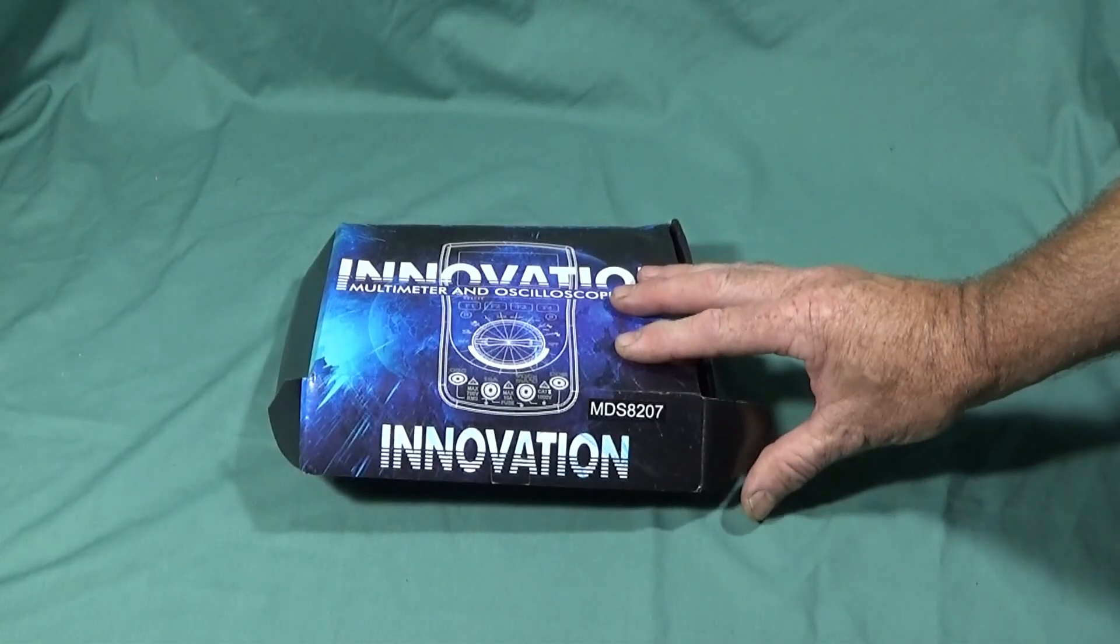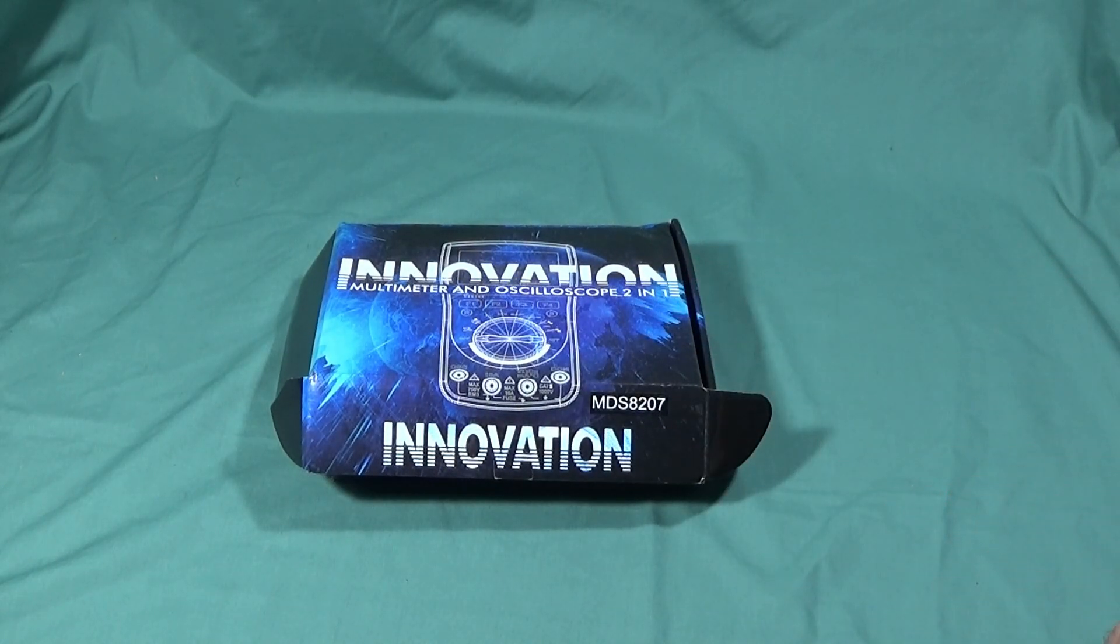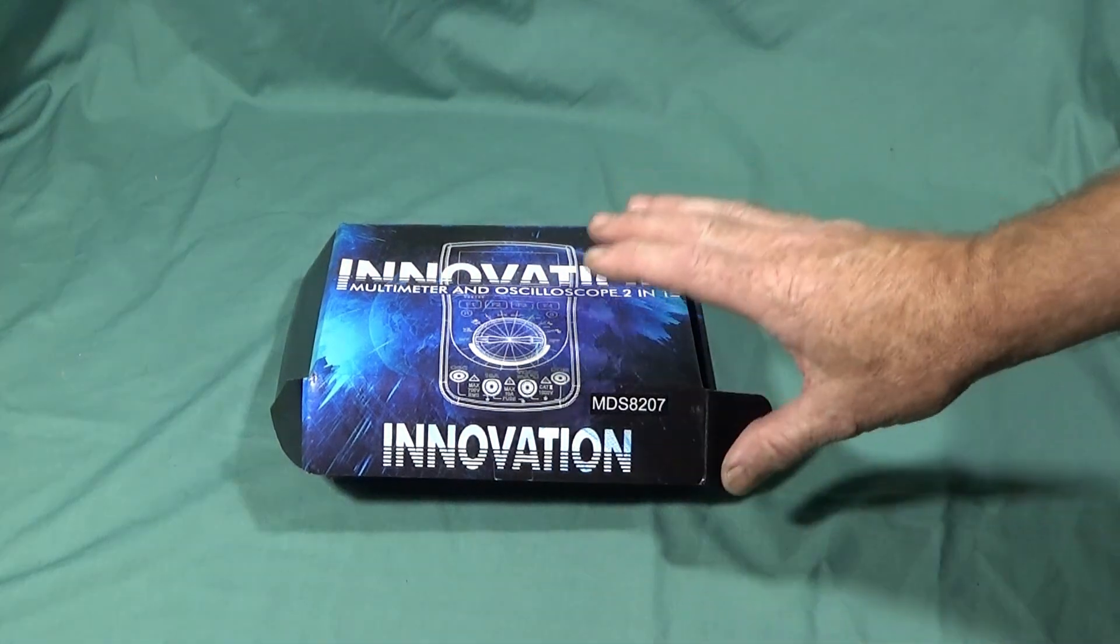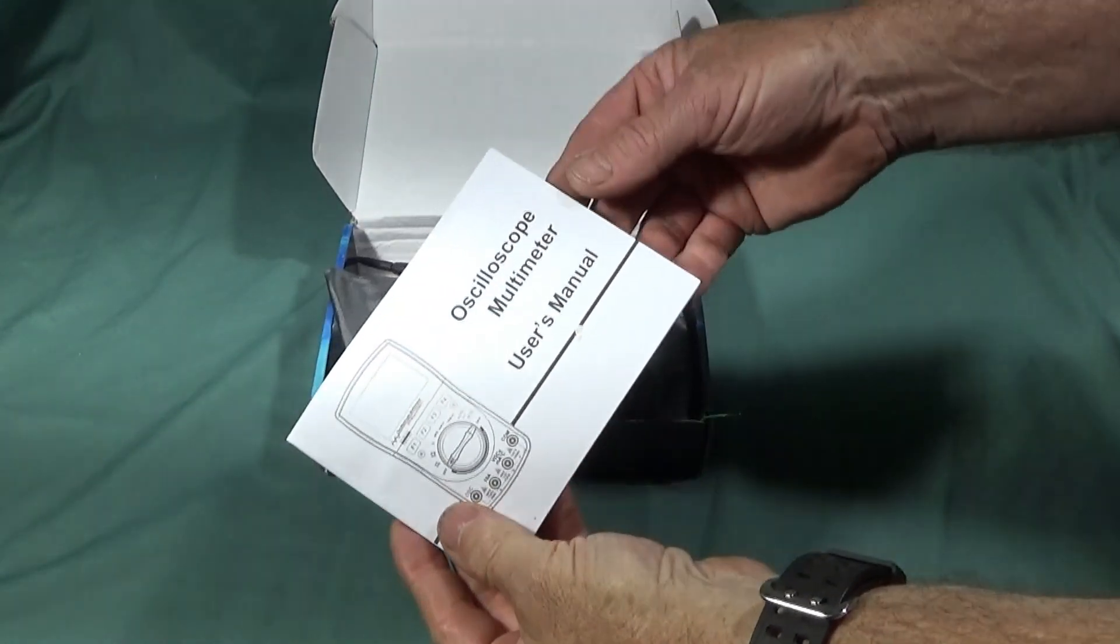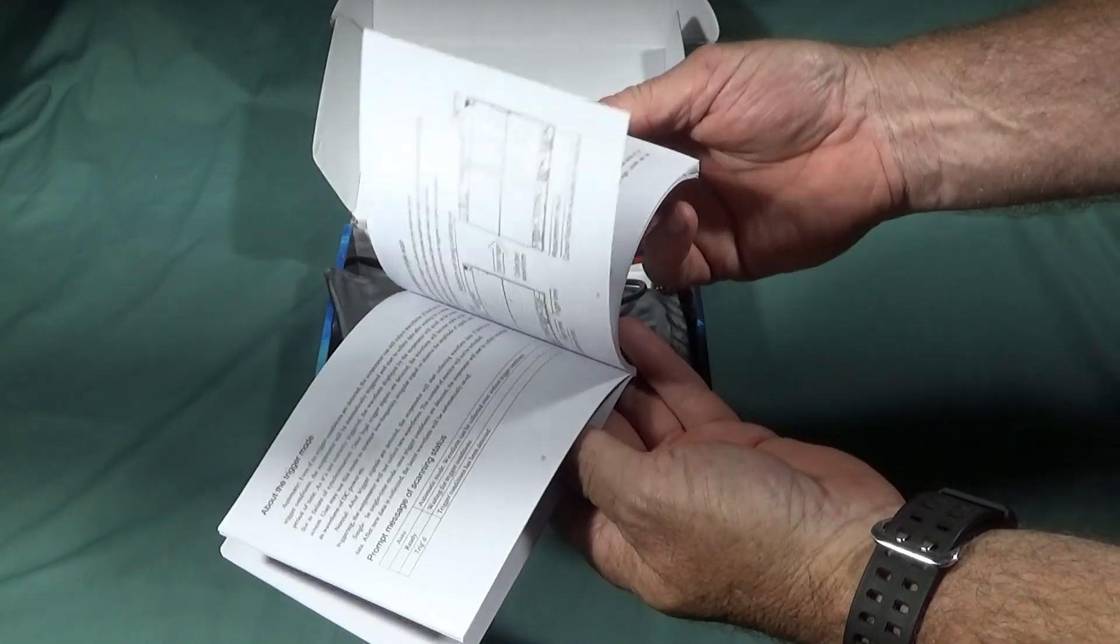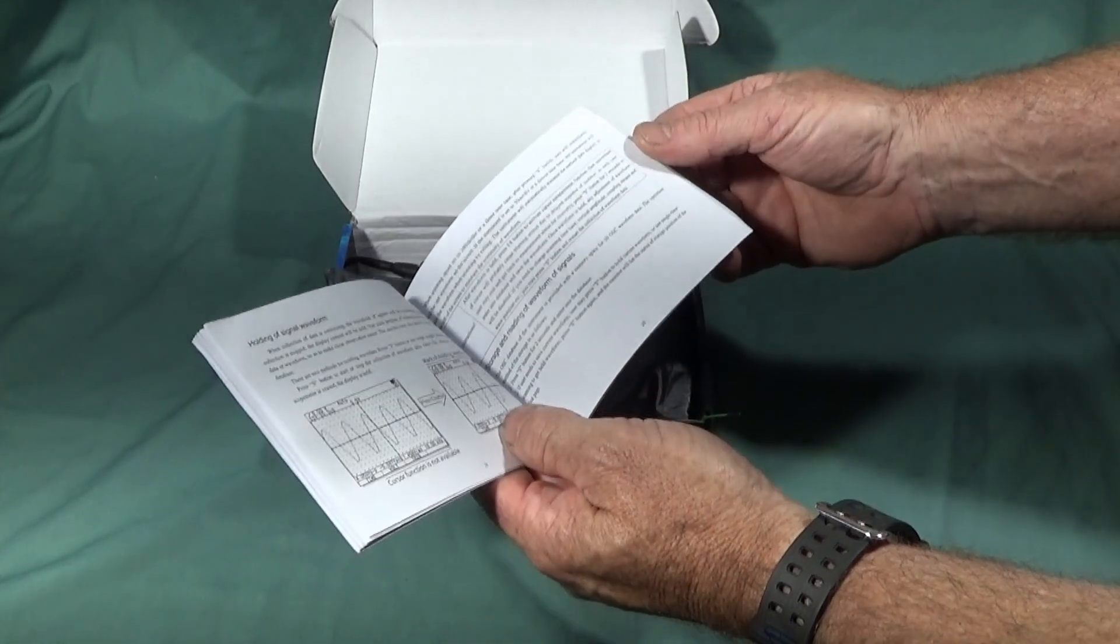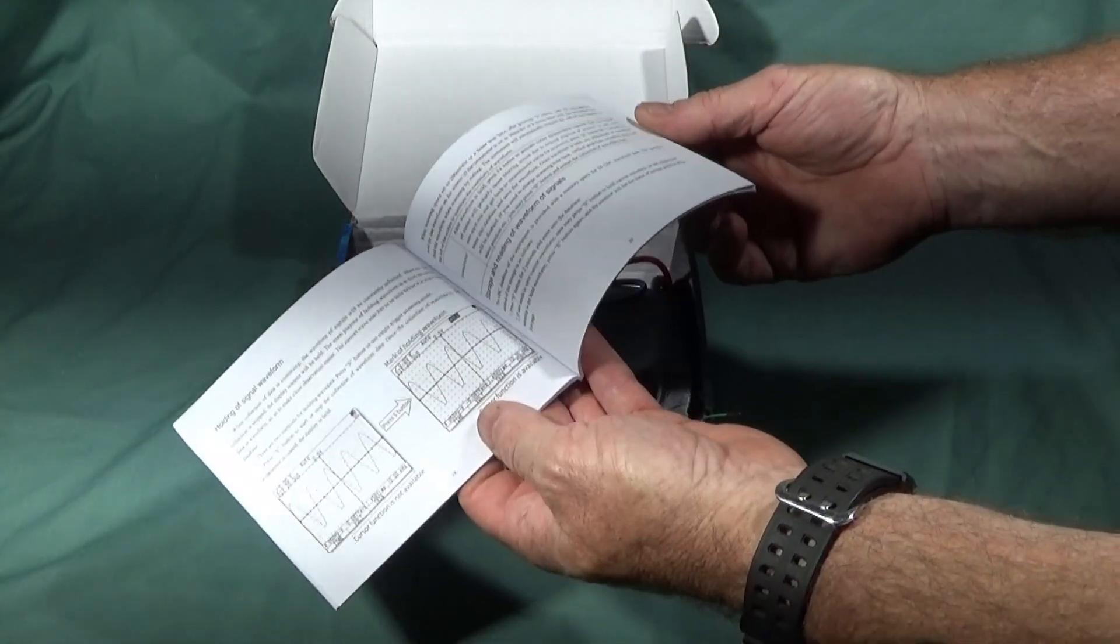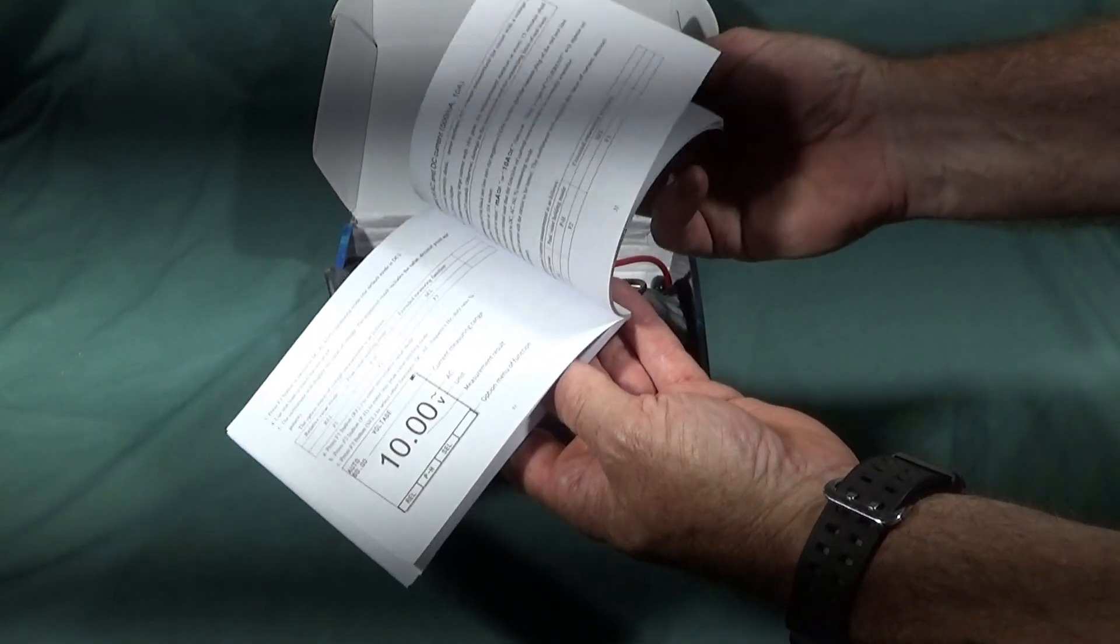It comes in this box here. It's made by Mustool and it's the MDS8207 model. In the box you have an excellent user's manual which is written in English throughout with many diagrams. I'm quite new to electronics, I only have basic electronic knowledge, so this is really handy to have a nice user manual like this one.